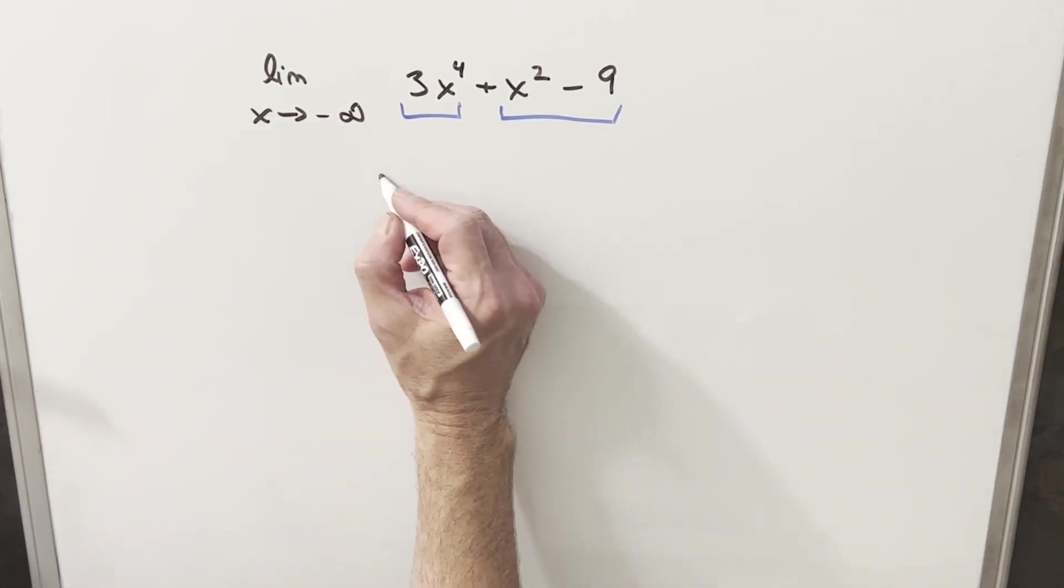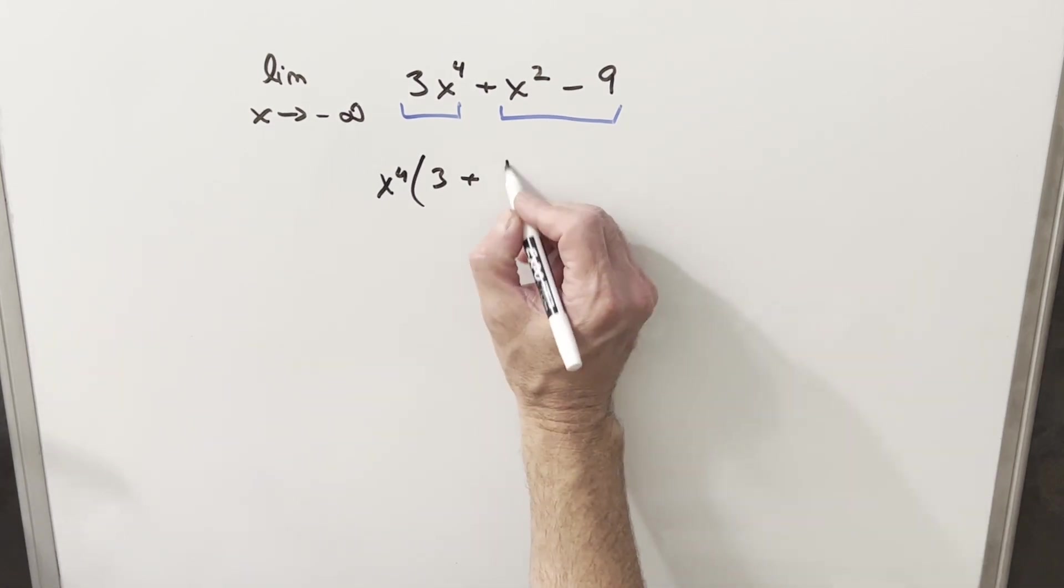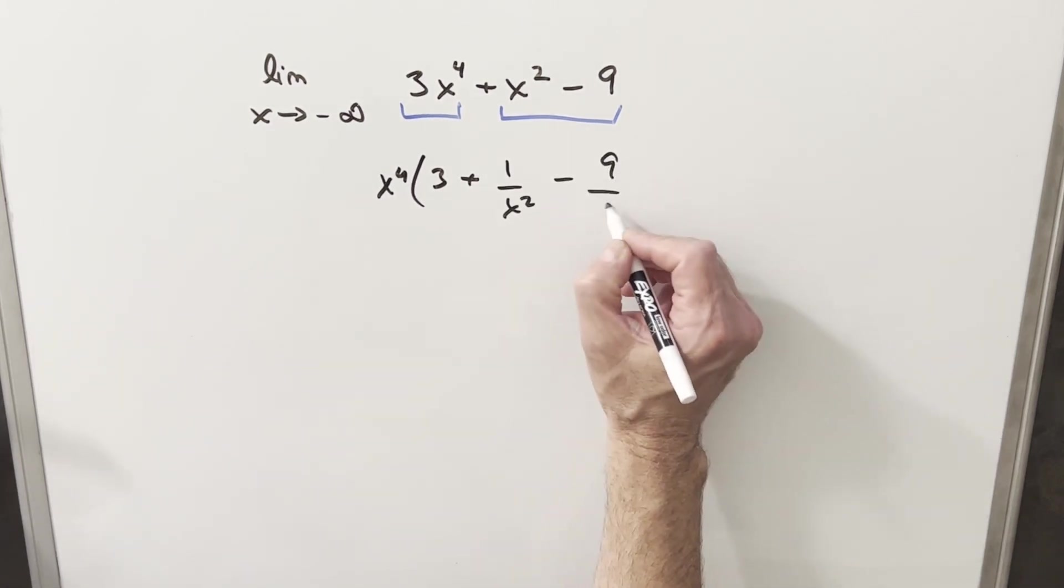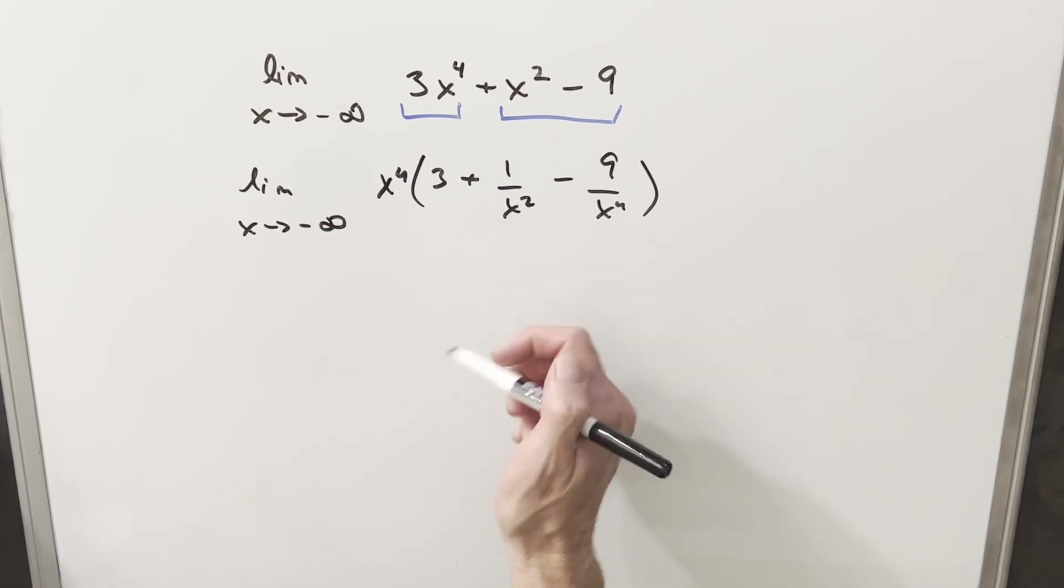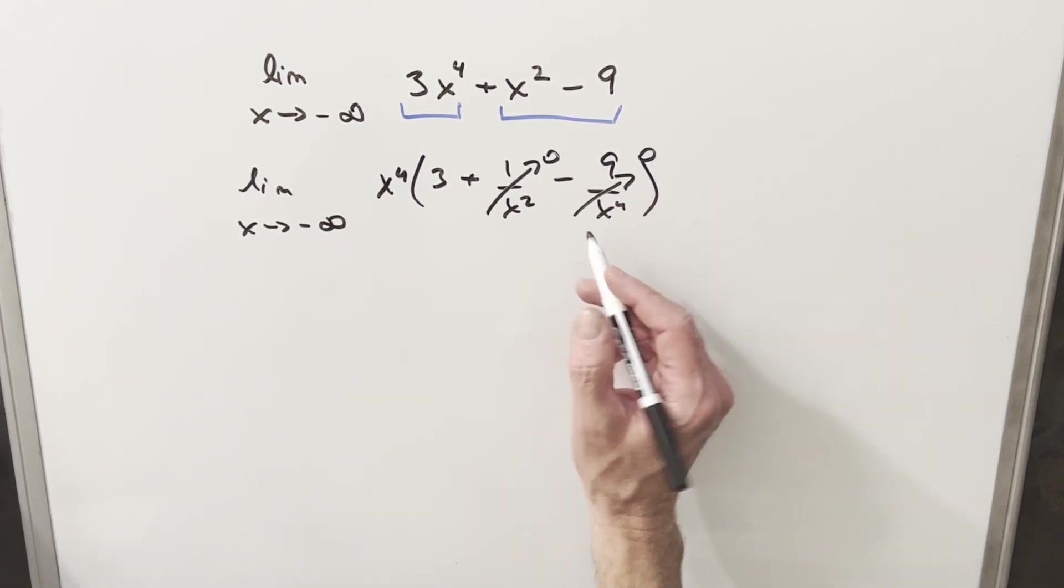So what I can do is factor an x to the 4th out of this and write this as 3 plus 1 over x squared minus 9 over x to the 4th. Now we can see that what's happening is this term is going to be going to 0, and this term is going to be going to 0, and that's why we said we could ignore this part right here.